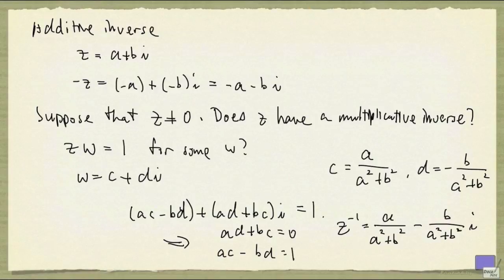Now, subtraction and division are defined as follows. So if you take z minus w, it really means z plus the additive inverse of w. And z divided by w means z multiplied by the multiplicative inverse of w.